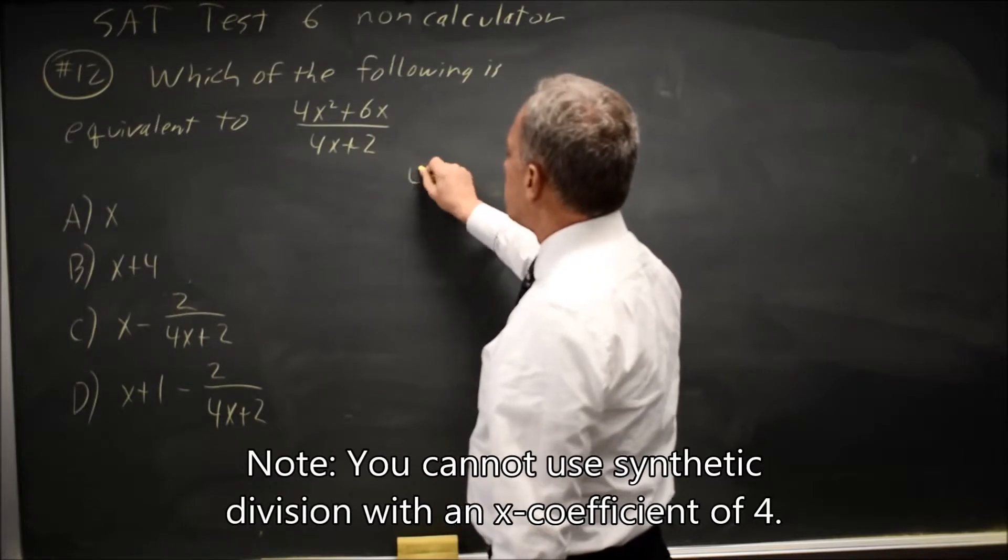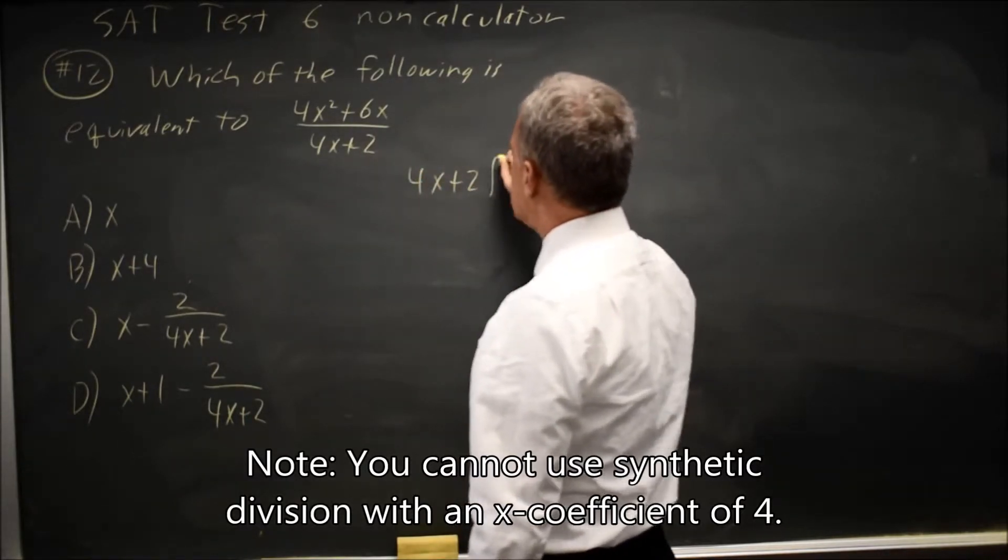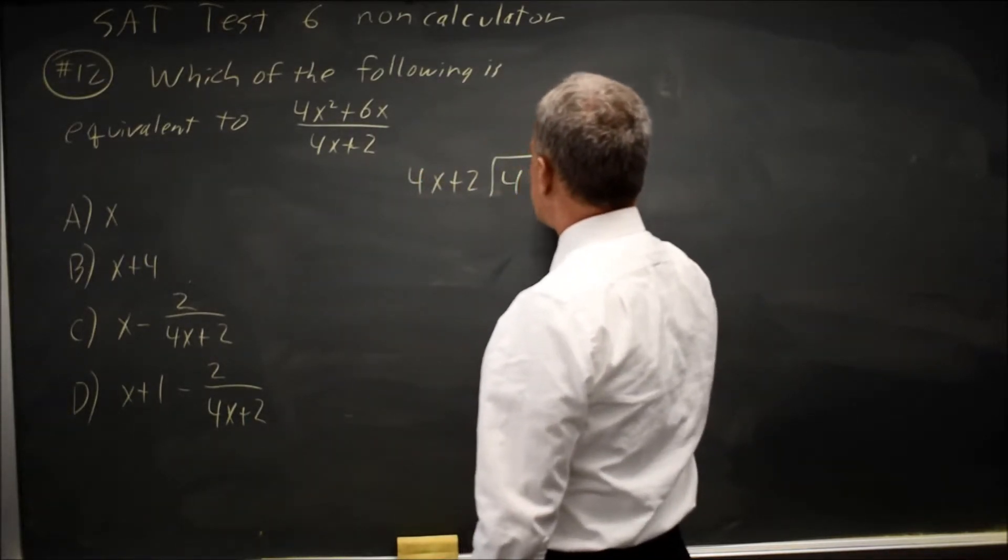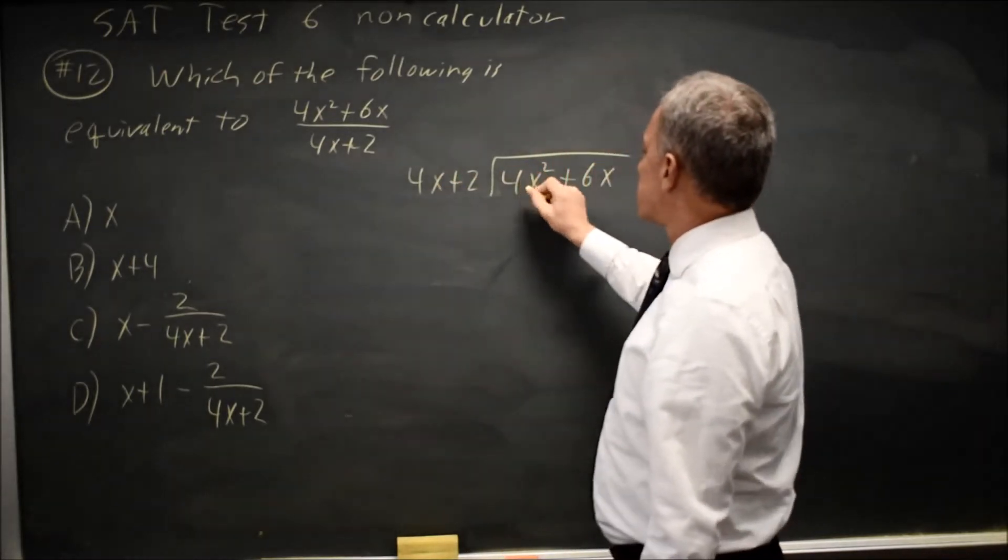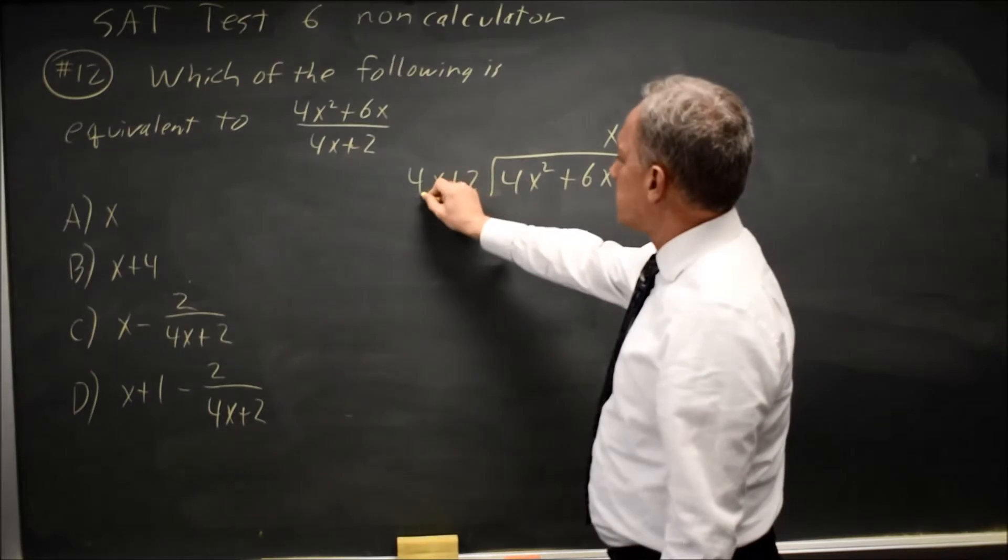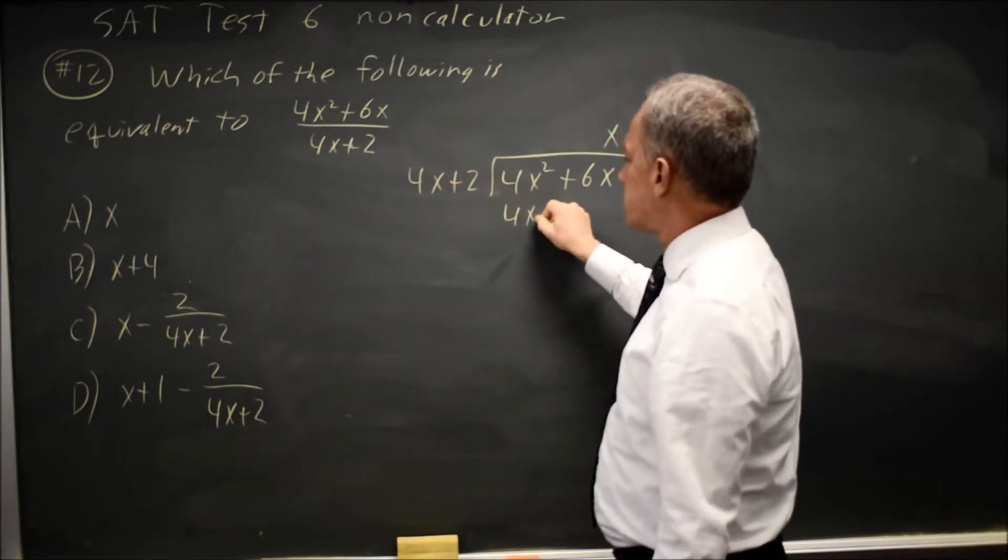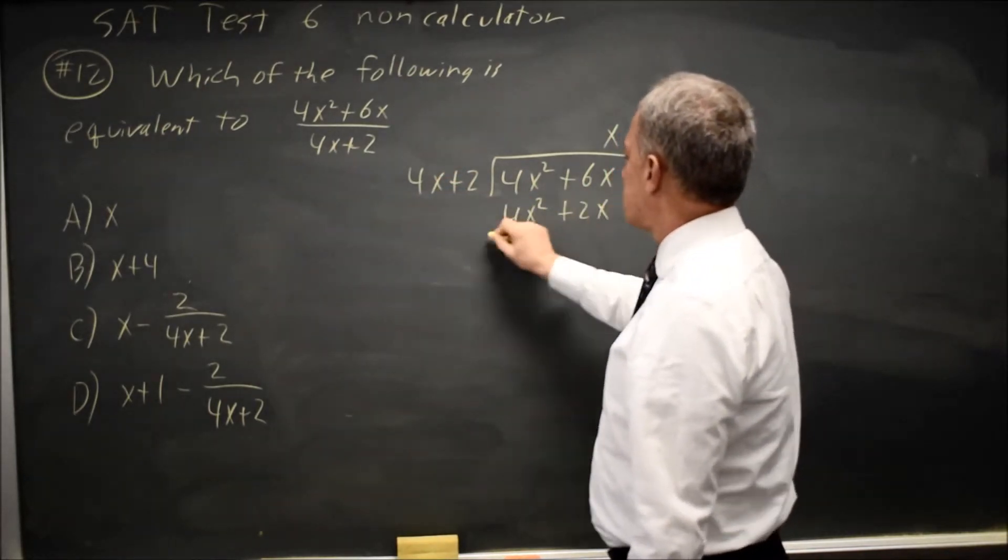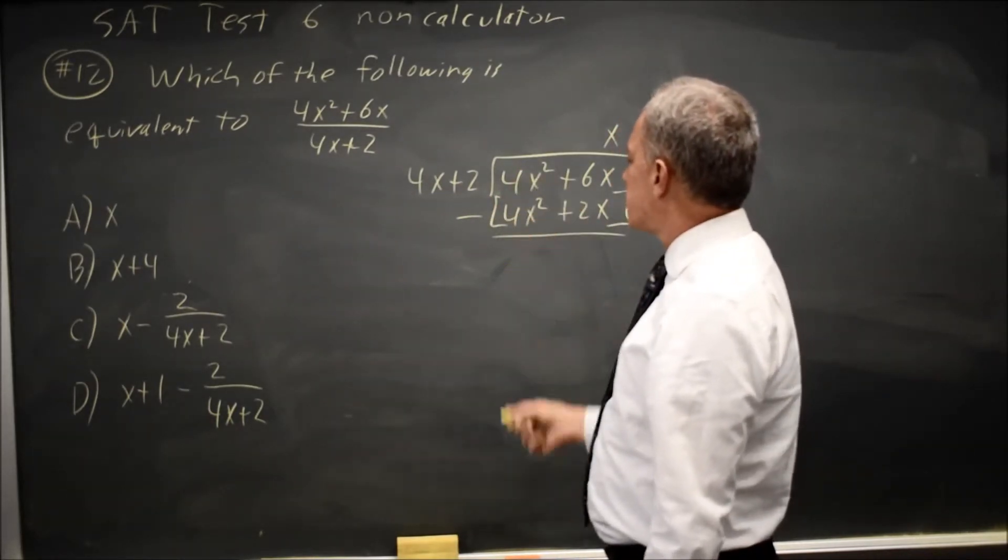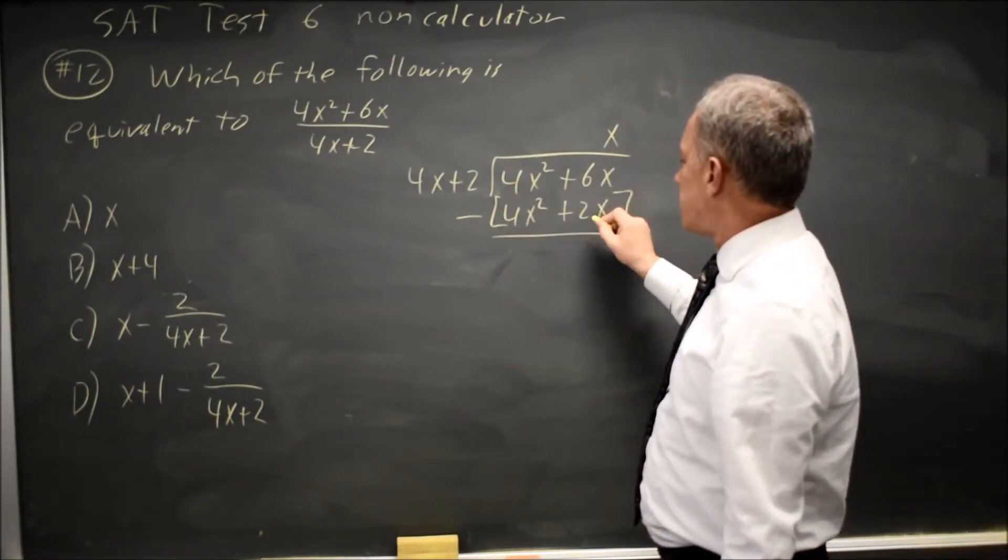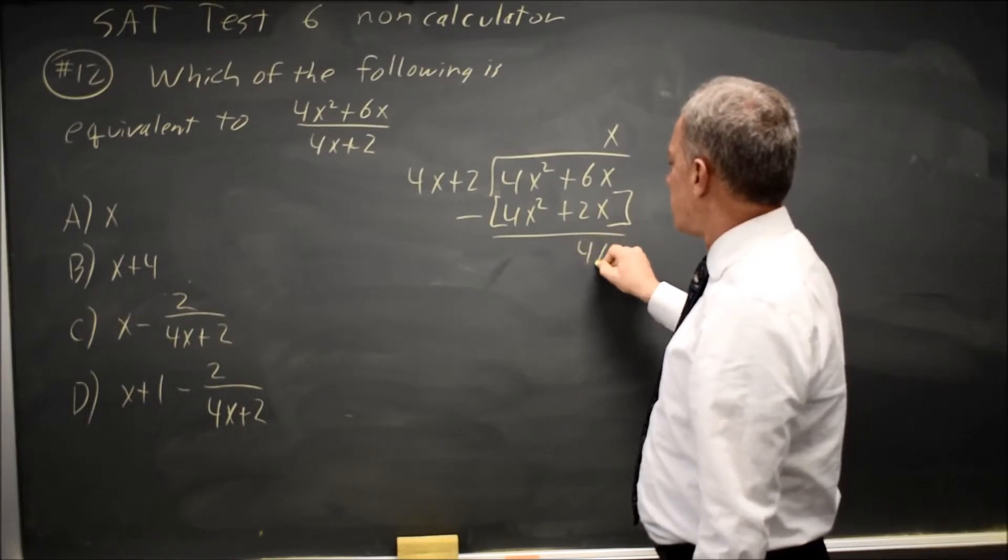Long division, 4x plus 2 into 4x squared plus 6x. 4x goes into 4x squared x times. x times 4x plus 2 is 4x squared plus 2x. I'm going to subtract that whole quantity. 4x squared minus 4x squared is 0x squared. 6x minus 2x is 4x.